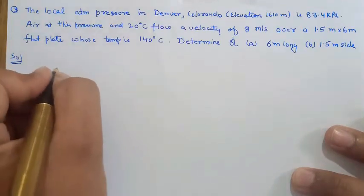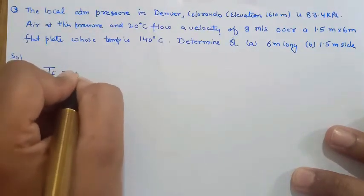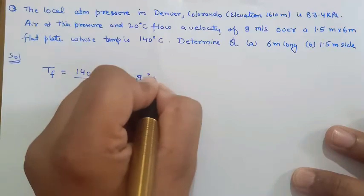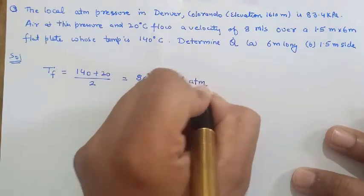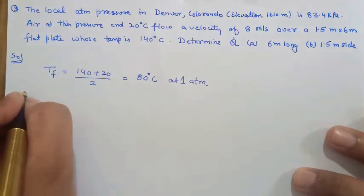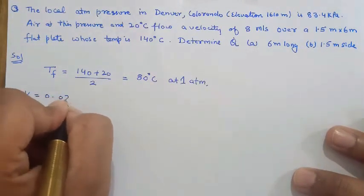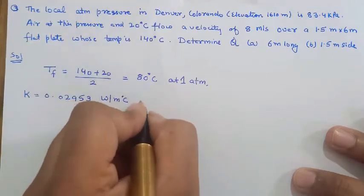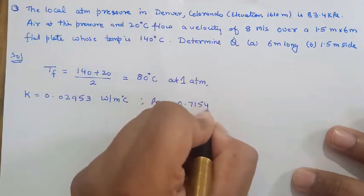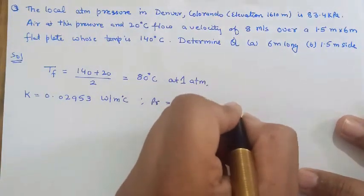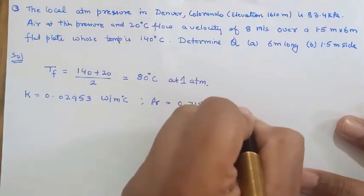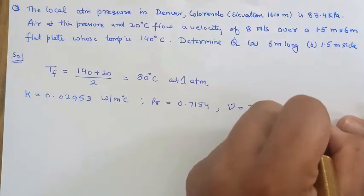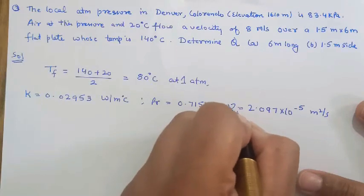The procedure and assumptions are similar to the previous numericals. The mean film temperature is (140 plus 20) divided by 2, giving 80 degree centigrade at 1 atmosphere. Properties at 80 degree centigrade: thermal conductivity k equals 0.0295 watt per meter degree, Prandtl number 0.7154, and kinematic viscosity 0.097 times 10 to the power minus 5 meter square per second.